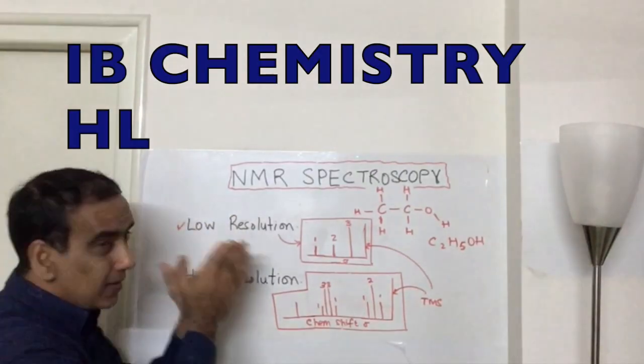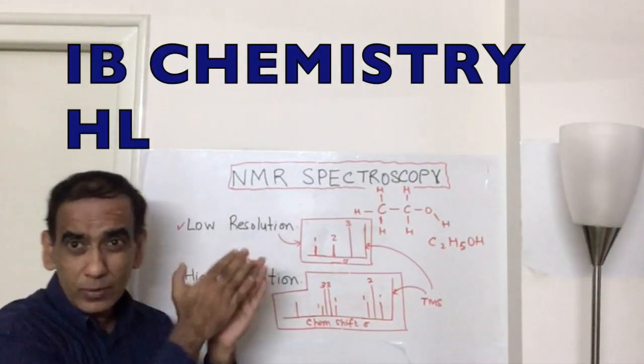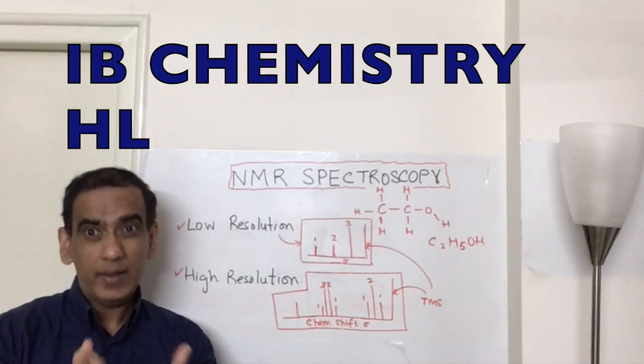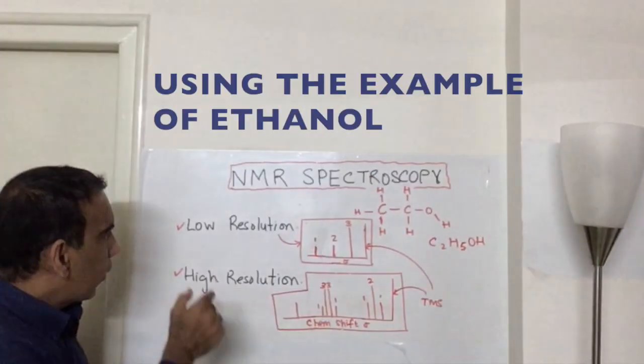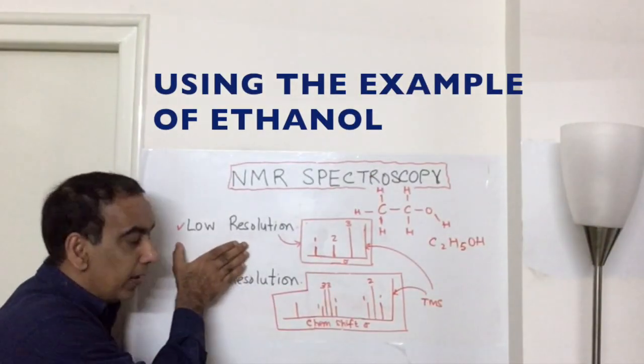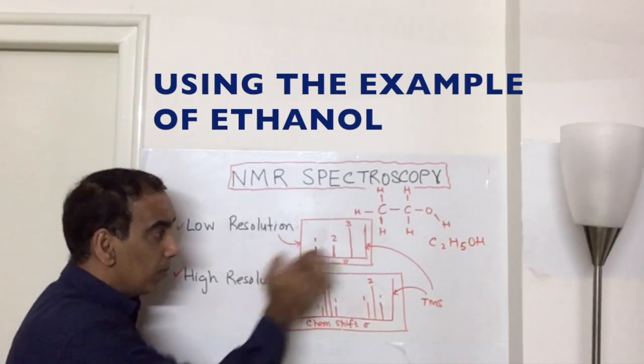Today we return to take a more detailed look at nuclear magnetic resonance or NMR spectroscopy. We should recall that its low-resolution NMR spectrum is going to have three distinct peaks.